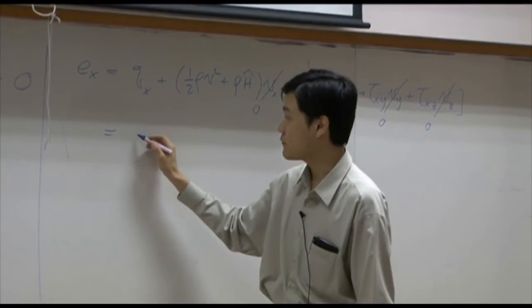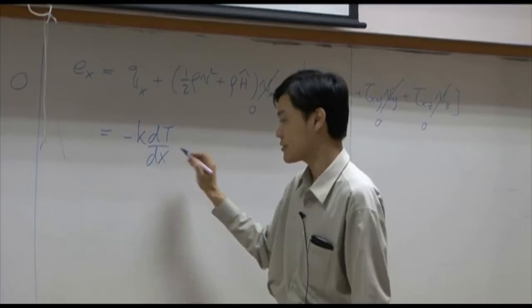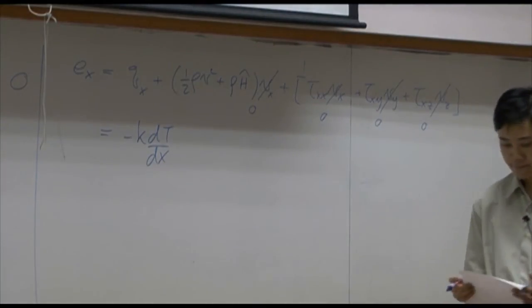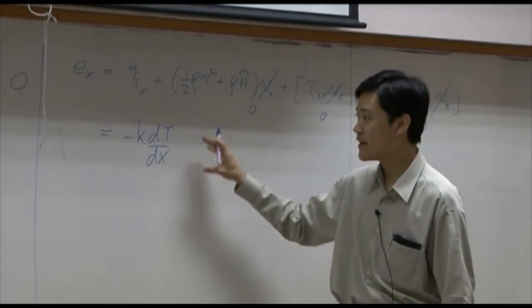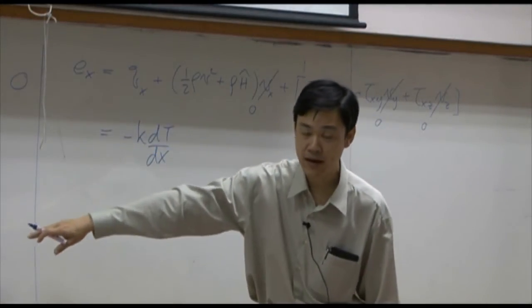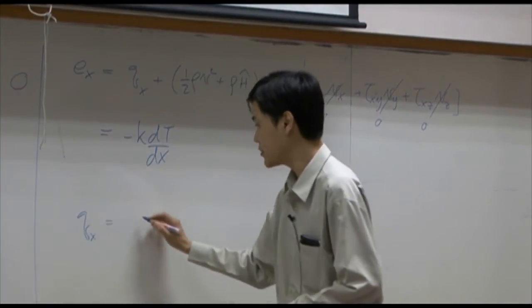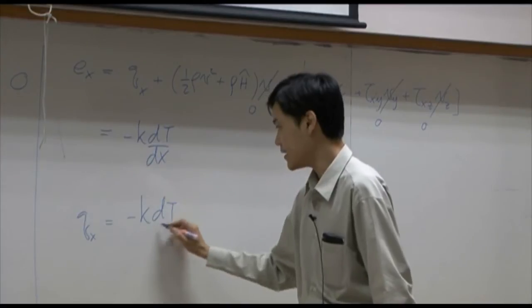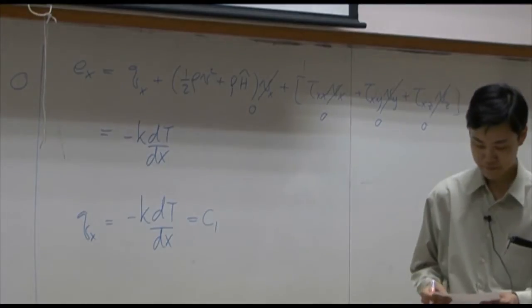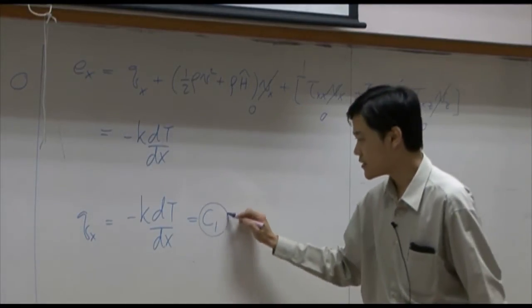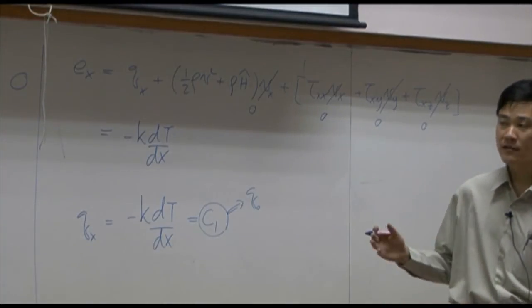And qx, according to Fourier law, is minus k dT by dx. So at the end you put this back to shear balance. You will get qx equal to minus k dT by dx equal to constant c1. And I can call this c1 to be q0, or flux at any point.